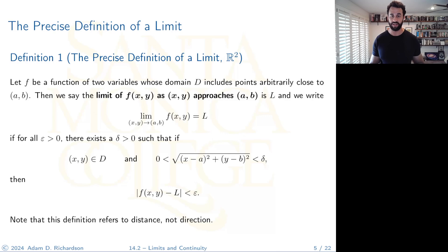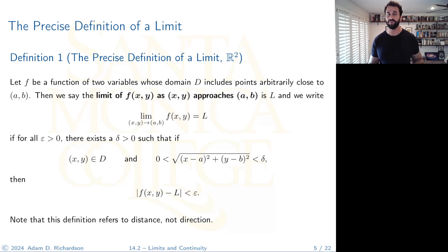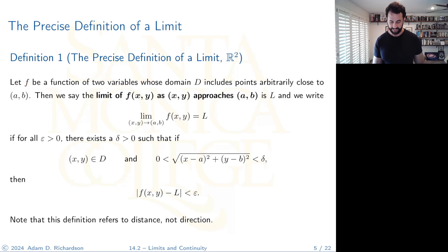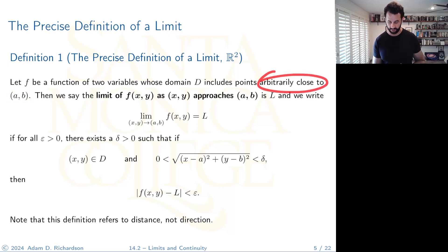This is where the precise definition of a limit is really important. Even though limits can be very intuitive, sometimes that intuition leads you down the wrong path. For functions of two variables: we have a function f whose domain D includes points arbitrarily close to the point (a, b) — the function does not need to be defined at that point, we just need to be able to get arbitrarily close.